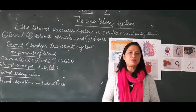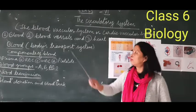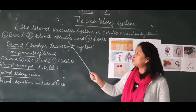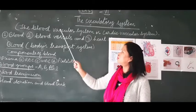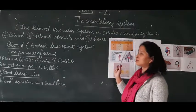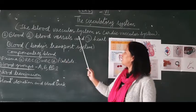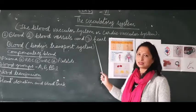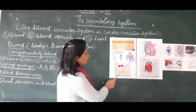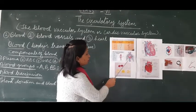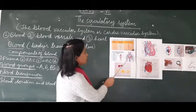In biology, we are going to study about the circulatory system. The circulatory system is also known as the blood vascular system or cardiovascular system, because it consists of blood, blood vessels, and the heart. Look at this picture — this is the heart, and the blue and red color tube-like structures are called blood vessels.